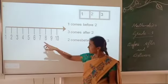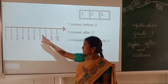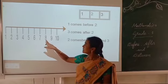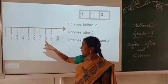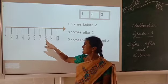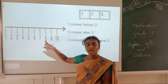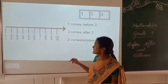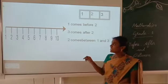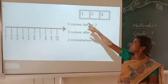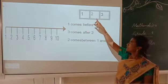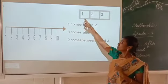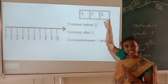Next, we take the number 8. What is the position of 8? The 8 comes after 7. Now I will take the first 3 numbers: 1, 2, 3. We are going to learn the position of these 3 numbers.